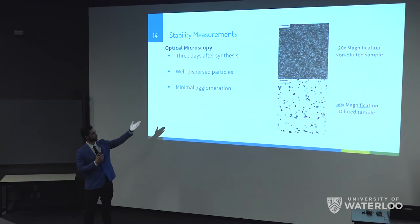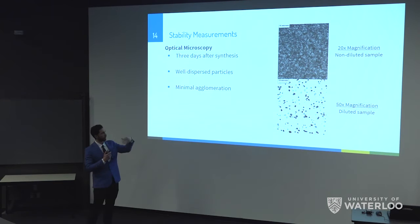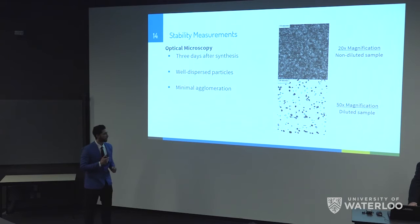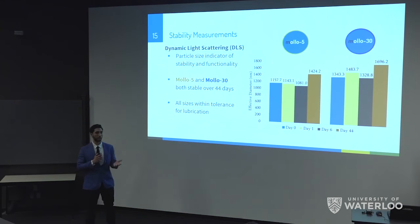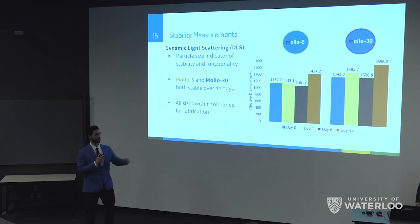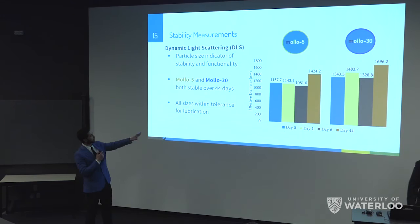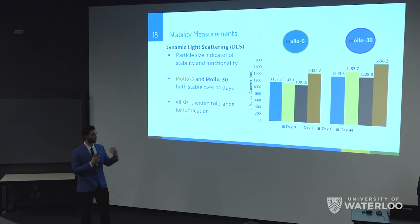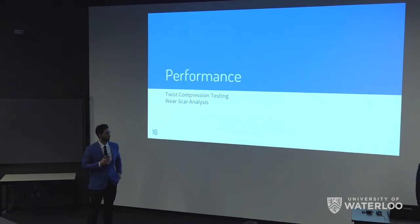Under the optical microscope, we can see the MALDO 5 sample undiluted. When we diluted the sample and took a higher magnification image, the particles are still well dispersed with minimal agglomeration after three days of synthesis. For long-term stability, we used dynamic light scattering to track particle size over time. Both MALDO 5 and MALDO 30 show similar particle sizes after six days compared to the initial day of synthesis, and even after 44 days the particle sizes remain within the ranges required for incorporation into a lubricant.